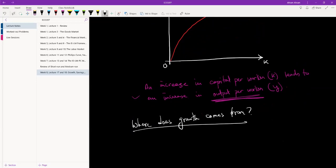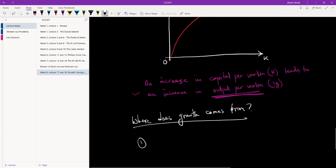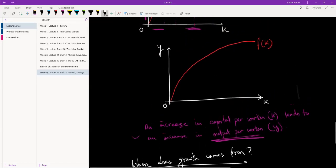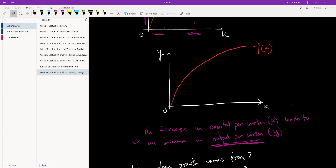Only two places. One, growth comes from capital accumulation. As we accumulate more and more capital, which would lead to an increase in capital per worker, small k, this diagram shows us that there is going to be an increase in output per worker.